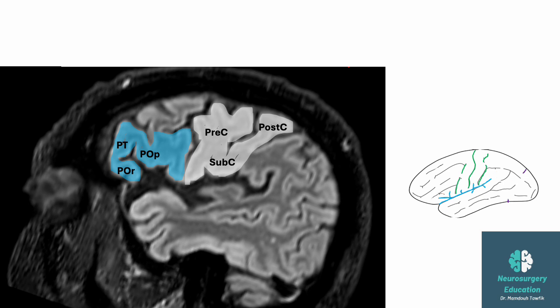The central operculum, which is part of the central loop, is composed of the pre-central and post-central gyrus. They are connected below the central sulcus in most cases by a sub-central gyrus. The parietal operculum is made of the supramarginal gyrus around the end of the sylvian fissure, and the temporal operculum is made of the superior temporal gyrus.